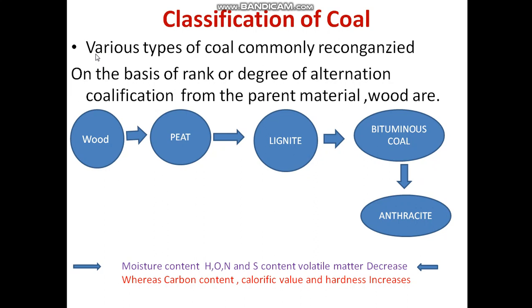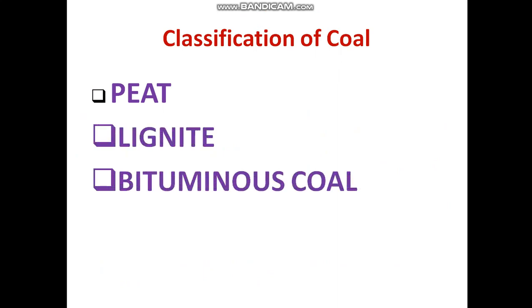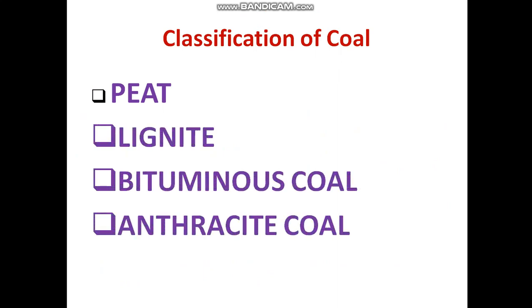These are the commonly recognized coals, ranked by the degree of alteration or coalification from the parent material wood. From wood, we get peat, lignite, bituminous coal, and anthracite. Let's have a look: first is peat, lignite, bituminous, and anthracite coal.